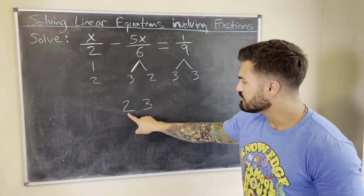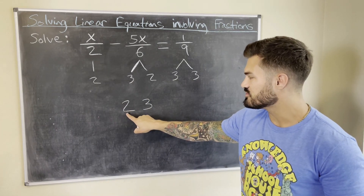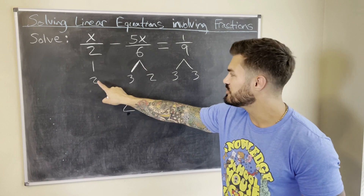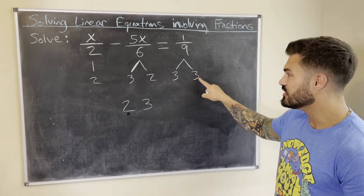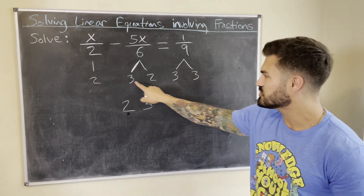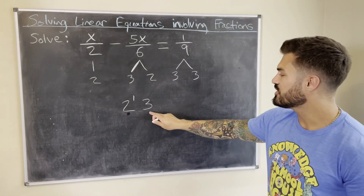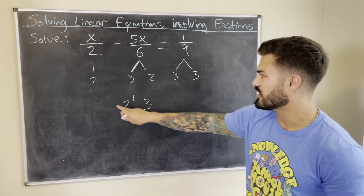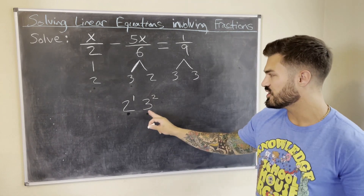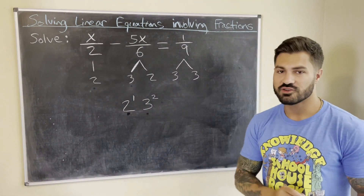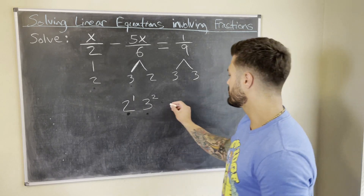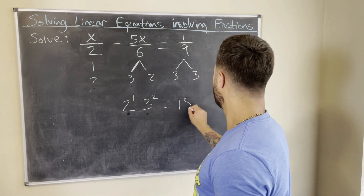For each unique factor, we look at the most times it appears in any single denominator. For 2: it appears once in the denominator 2, once in 6, and zero times in 9 — so the maximum is one. For 3: it appears zero times in 2, once in 6, and twice in 9 — so the maximum is two. Therefore the LCD is 2 to the first power times 3 to the second power, which equals 18.